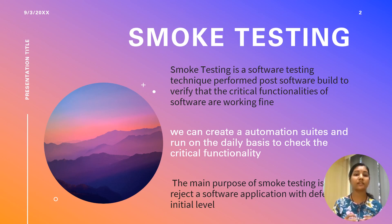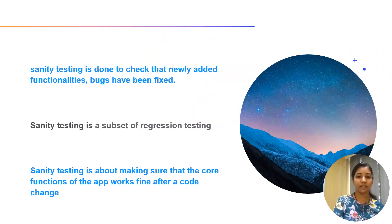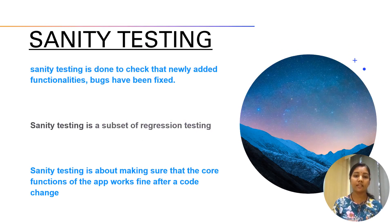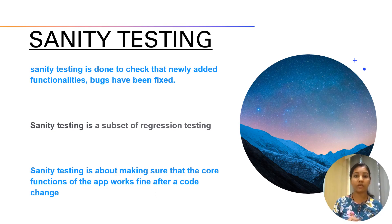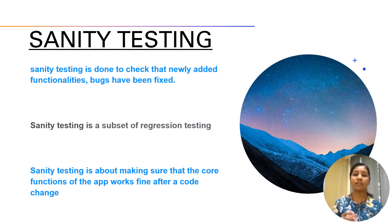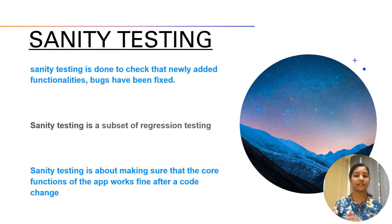What exactly is sanity testing? Sanity testing is done to check that newly added functionality works or bugs have been fixed. If there are any changes in the bug or changes in the application, or if a fix has been applied, we check whether the existing code is still working fine. Sanity testing is a subset of regression testing — we check at the feature level or module level, whereas in regression testing we perform end-to-end application testing.